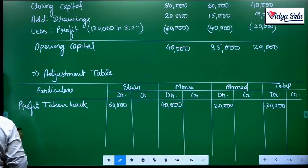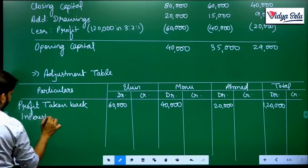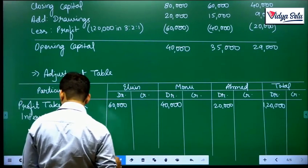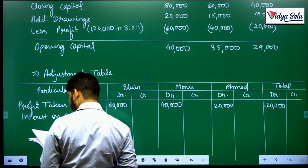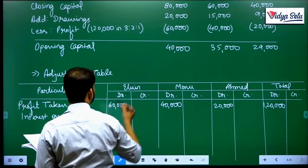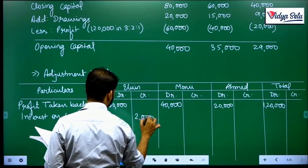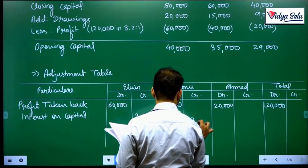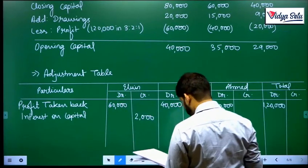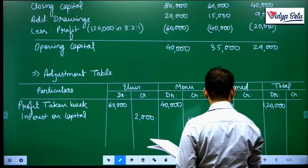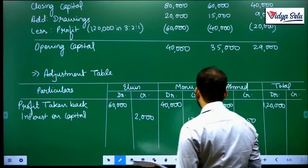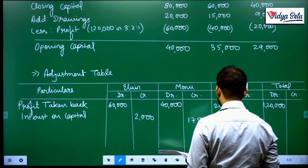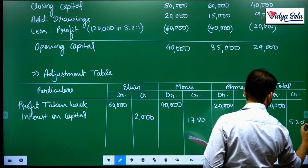Now we have the money, what we will do? We will give the interest on capital. How much? 5 percent. 40,000 into 5% is 2,000, 35,000 into 5% is 1,750, and 29,000 into 5% is 1,450. So total 5,200.